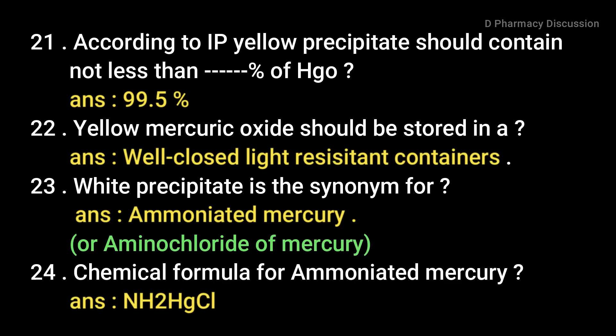According to IP, yellow precipitate should contain not less than 99.5% of HgO, that is yellow mercury oxide. It is a tricky question: yellow mercury oxide should be stored in well-closed, light-resistant containers. Other compounds stored in light-resistant containers include mercury, iodine, potassium iodide, and silver nitrate.